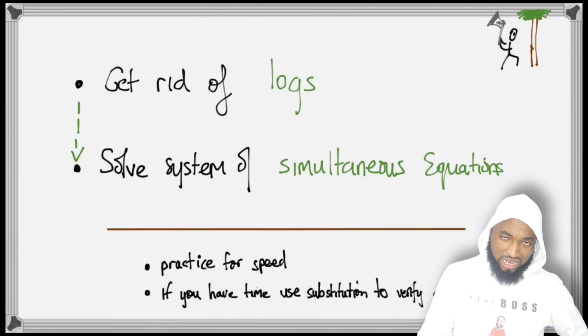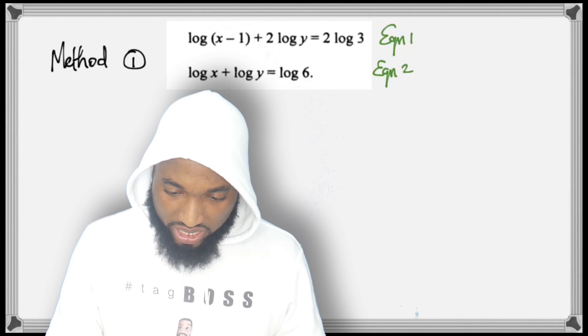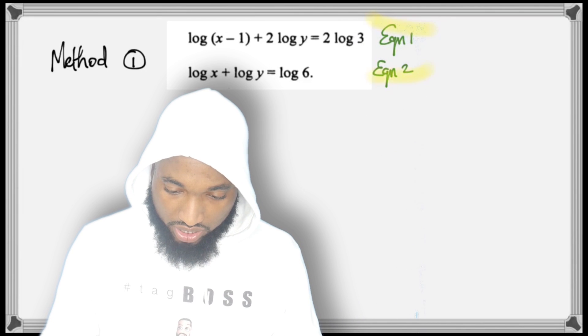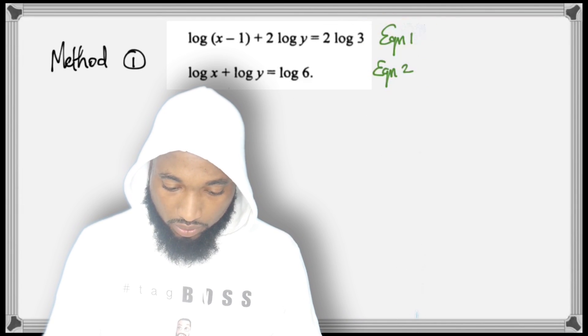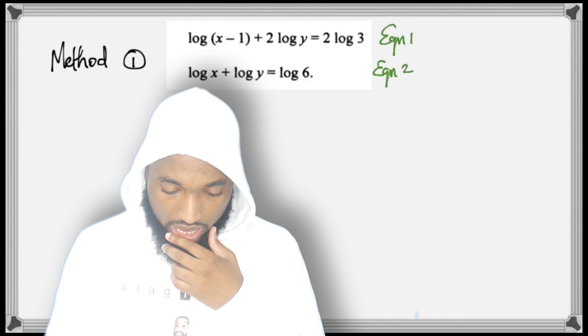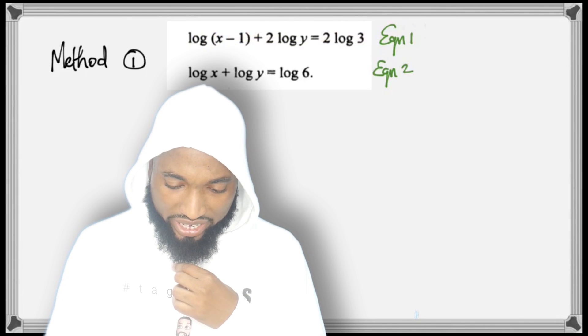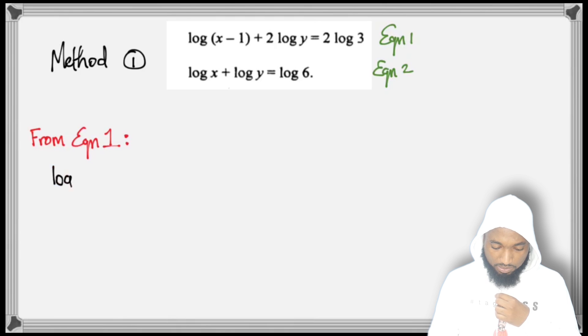Let's look at Method 1. We have the equations there—notice I labeled them Equation 1 and Equation 2. I'm going to organize these equations to try and get rid of the logs. I'm going to get rid of this 2, so let's pick Equation 1 first.